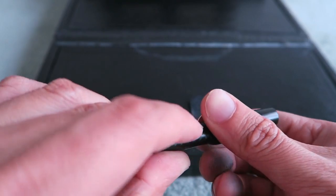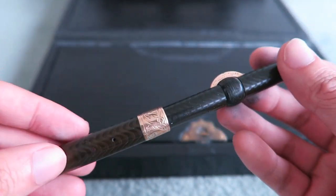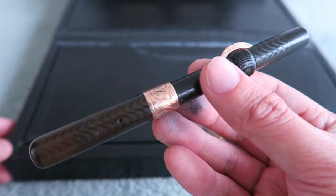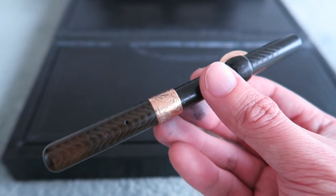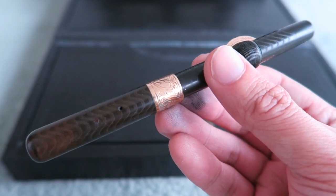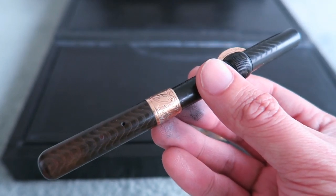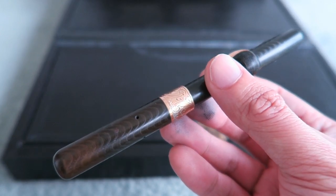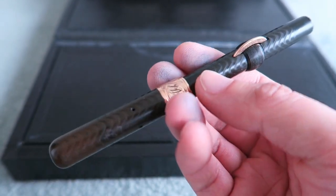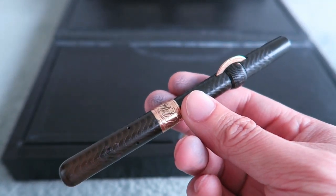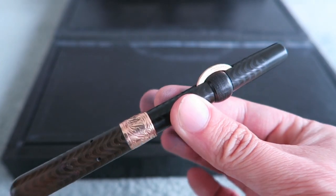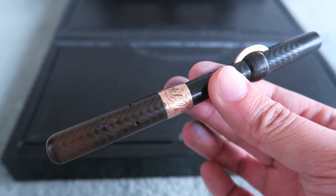Okay. Now, the Conklin Crescent Filler was one of the most famous pens of its day. One reason it was so famous, was because the Conklin Pen Company got really smart, and they decided to do celebrity endorsements. And what celebrity did they get to endorse this pen? Someone called Mark Twain. Mark Twain used to use one of these pens, a Conklin Crescent Filler.